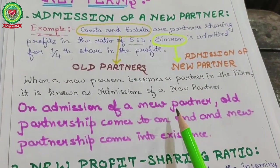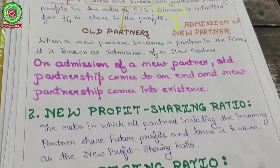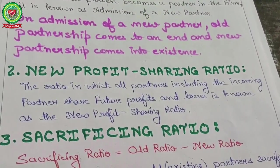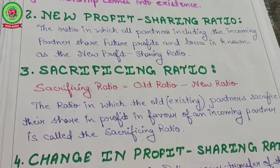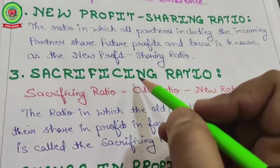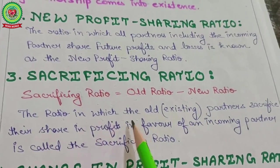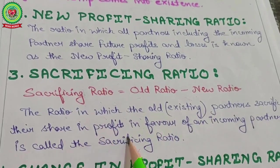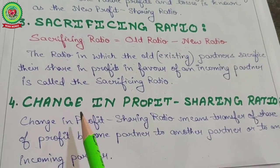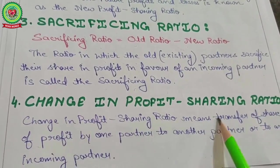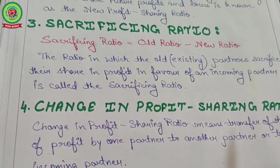On admission, your partnership firm does not come to an end — only the partnership deed changes. Next key term: new profit sharing ratio — the ratio in which all partners, including the incoming partner, share future profits and losses. Next, sacrificing ratio: old ratio minus new ratio — the ratio in which old existing partners sacrifice their share of profit in favor of an incoming partner. And change in profit sharing ratio means transfer of share of profit by one partner to another or to an incoming partner.